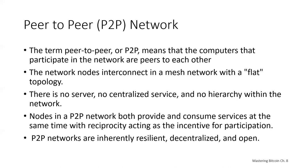A preeminent example of a P2P network architecture was the early Internet itself, where nodes in the IP network were equal. Today's Internet architecture is more hierarchical, but the Internet protocol still retains a flat topology essence. Beyond Bitcoin, the largest and most successful application of P2P technologies is in the file sharing area, with Napster and BitTorrent as examples of the architecture.